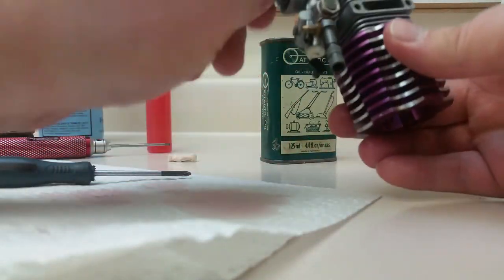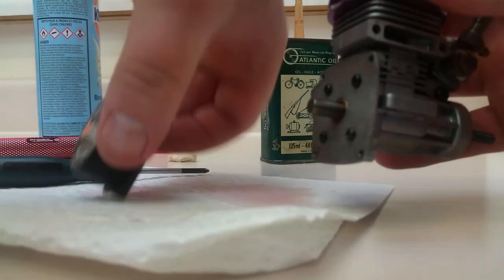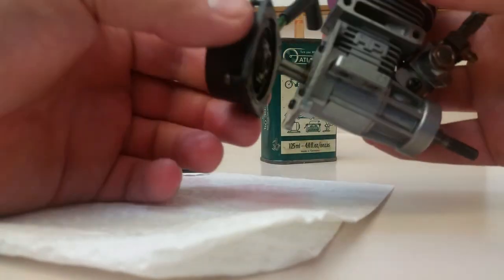Like I said, you don't want to go crazy tight, you just want to snug them. Make sure they're tight enough. There's no binding, everything turns free. And replace our pull starter.